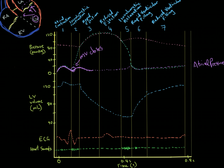Once blood has ejected from the left ventricle into the outflow tract and up the aorta, the atrial pressure comes back down and stays at a relatively constant low for quite a while. Remember all of this is happening over 0.8 seconds. Then we enter the isovolumetric relaxation phase, and atrial pressure goes up again because the left atrium is being filled.